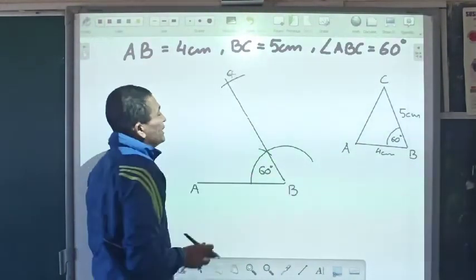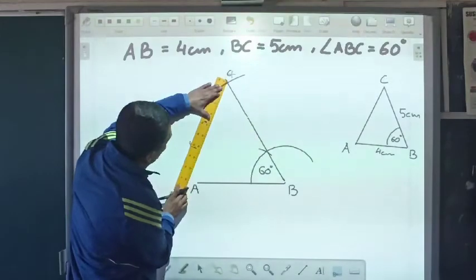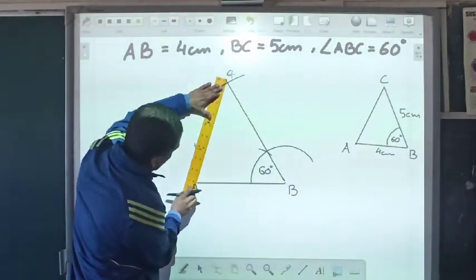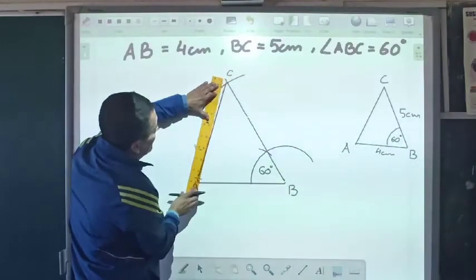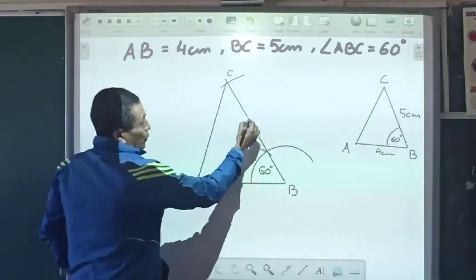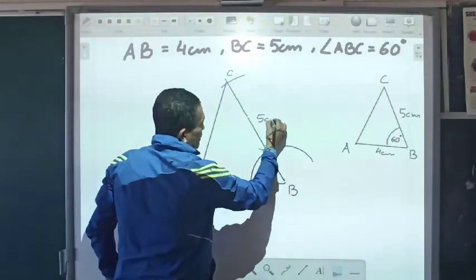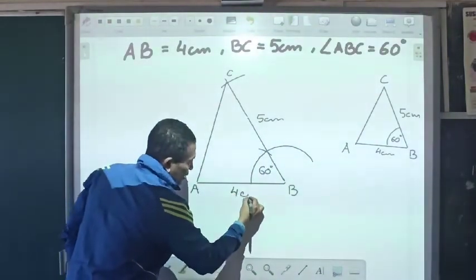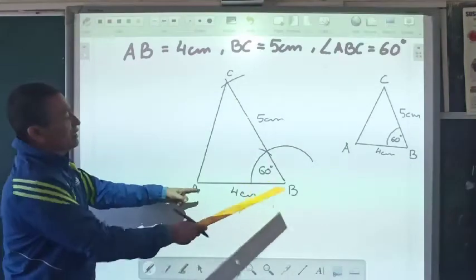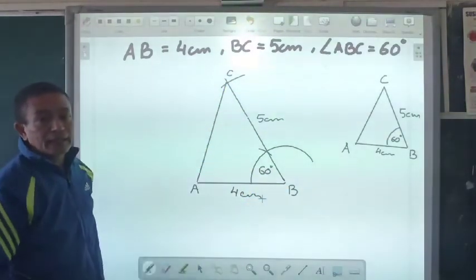So this is point C. All I have to do is join this point with A. This will be equal to 5 cm here. So this gives us 4 cm as our base. This is the triangle that is formed.